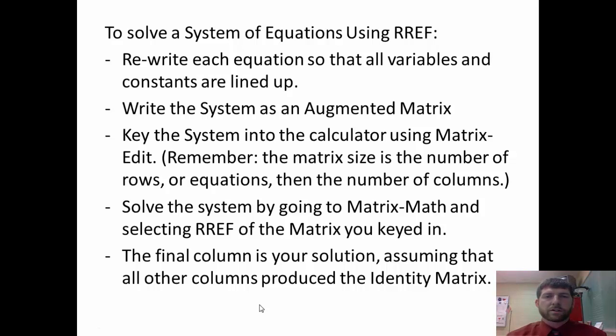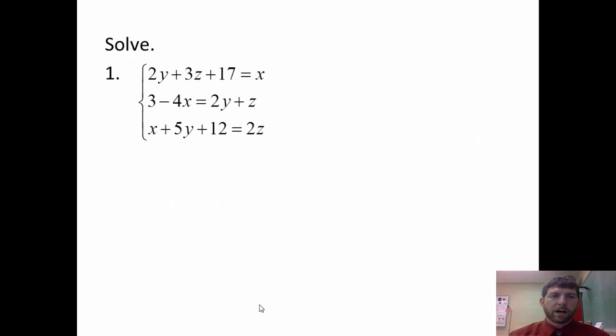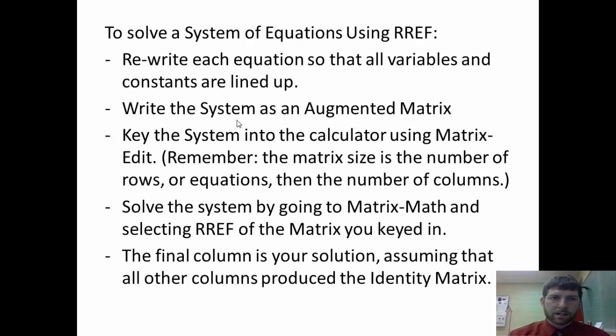To solve a system, first thing we need to do is rewrite each equation so that all the variables and constants are lined up. If we look in this first example, you see how all the X's, the Y's, the Z's, they're not in columns as they should be. So the first thing you want to do is line those up. Once they're lined up, we'll write the system as an augmented matrix.